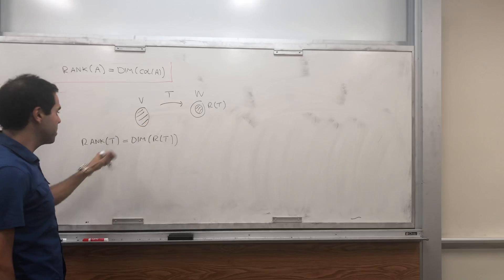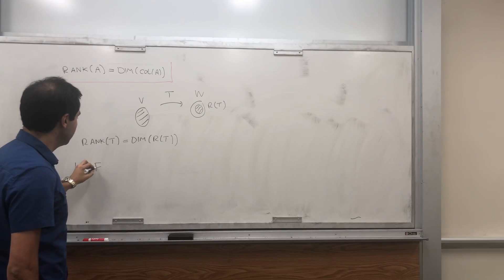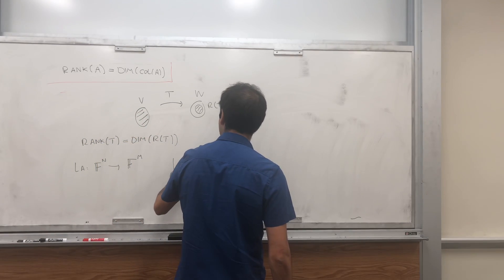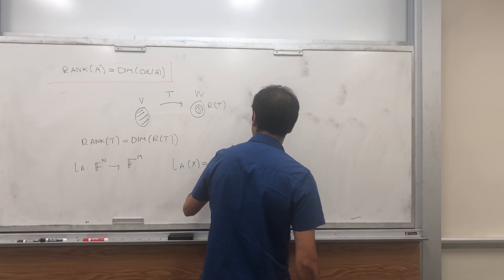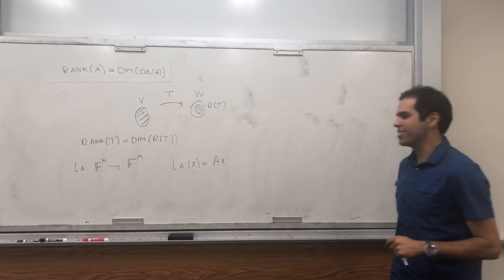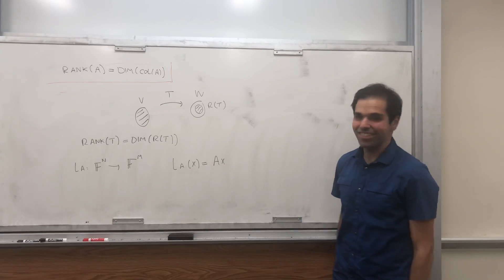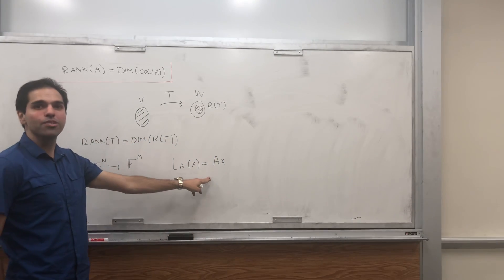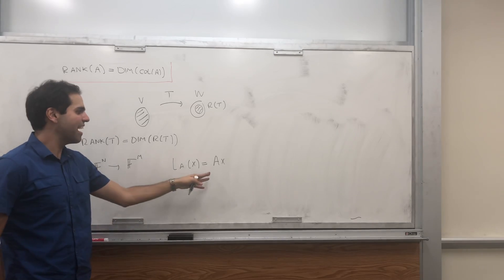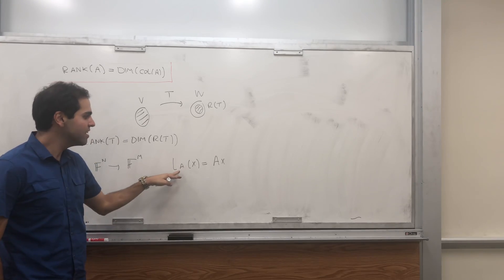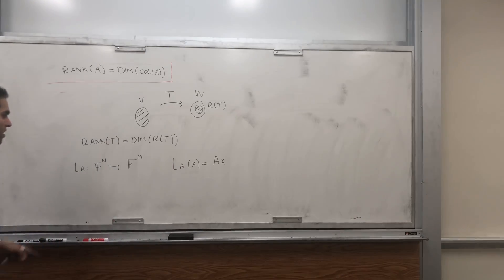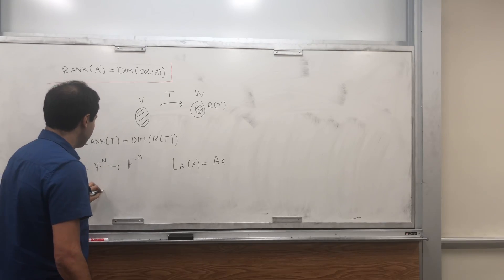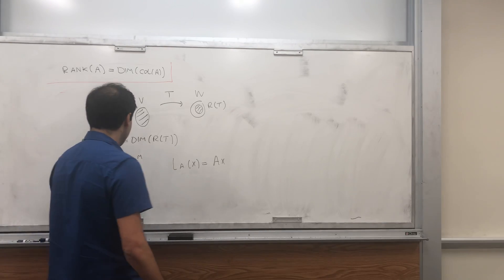It turns out that given a matrix, you can define a particularly nice linear transformation called L_a, simply defined as L_a of x equals a times x. That's called left multiplication by a. You might be used to saying a matrix is one-to-one, but technically that doesn't make sense — what you really mean is L_a is one-to-one. And using L_a, we can define the rank of a as simply the dimension of the range of L_a.